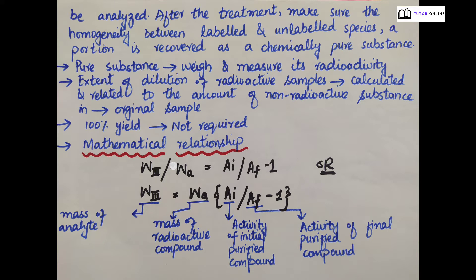A portion is recovered as a chemically pure substance. The pure substance is weighed and its radioactivity is measured. The extent of dilution of radioactive samples may be calculated and related to the amount of non-radioactive substances in the original sample. This process can be used to determine the mass and quantity.